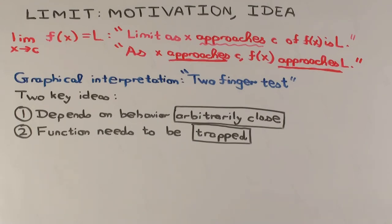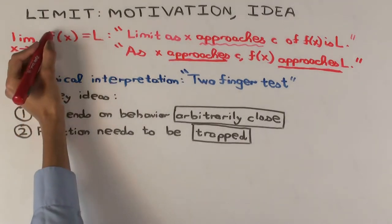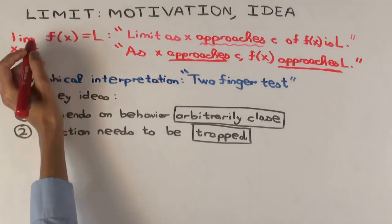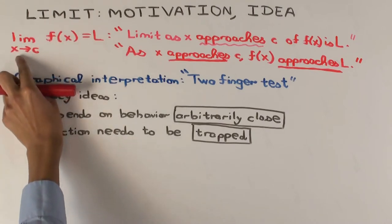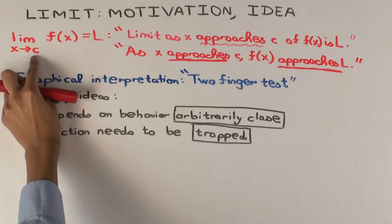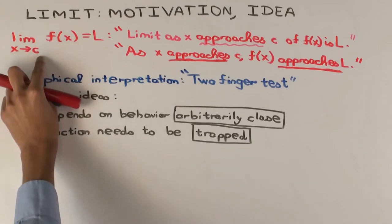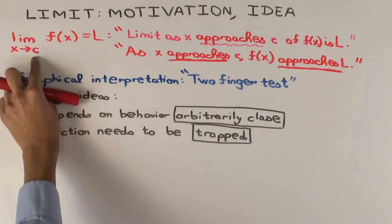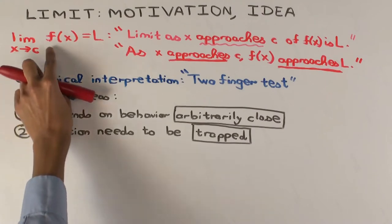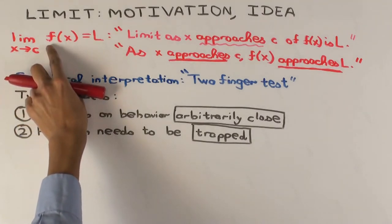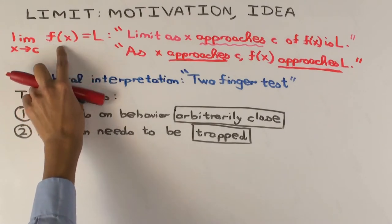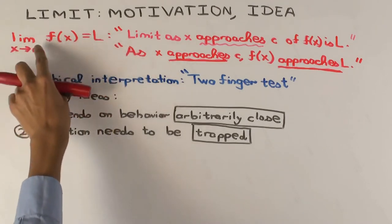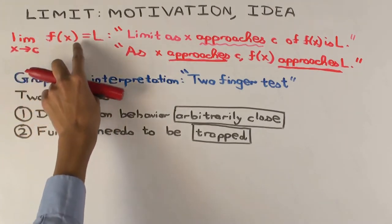Here I have the notation: limit as x approaches c of f(x), written like this. Under the limit we write where the domain variable goes, so x is approaching a value c. Here c could be an actual number, while x will always be a variable. f is a function, and we are saying that as x approaches some number c, f(x) approaches some number L. That's what the limit as x approaches c of f(x) equals L means.